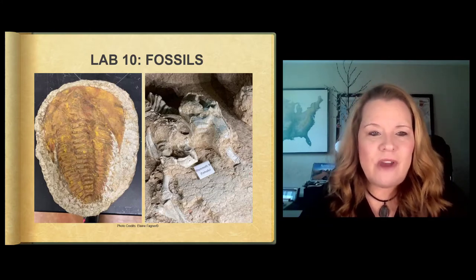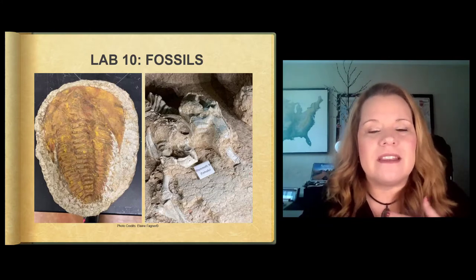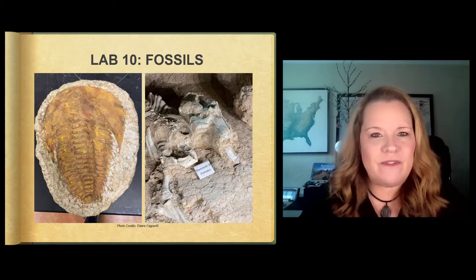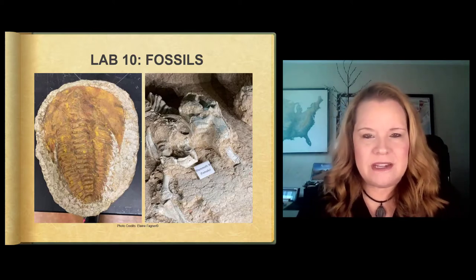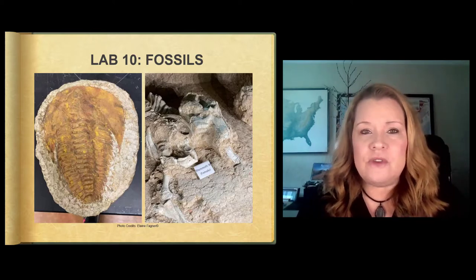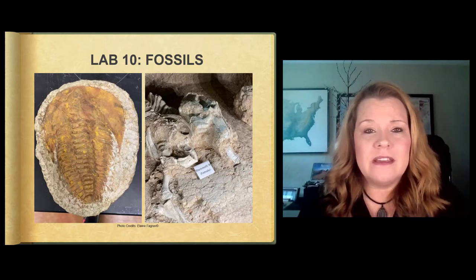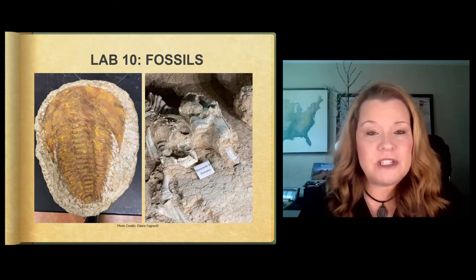So you can see a trilobite on the left that's just like my necklace here, clue. And then you see Mammoth W over here on the right on the Mammoth site in Waco, which is a national monument. You need to read your chapter reading in the book and watch the lecture video from start to finish.